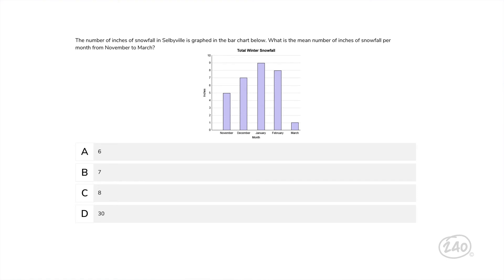One category down, two to go. Moving on to data and stats, let's look at a question from that data interpretation section. The number of inches of snowfall in Selbyville is graphed in the bar chart below. What is the mean number of inches of snowfall per month from November to March? To find the mean, we need to add up all values and divide by the number of values in the data set. So 5 plus 7 plus 9 plus 8 plus 1, which equals 30. There are 5 data points, so 30 divided by 5 gives us 6. So this one is correct. Nice!